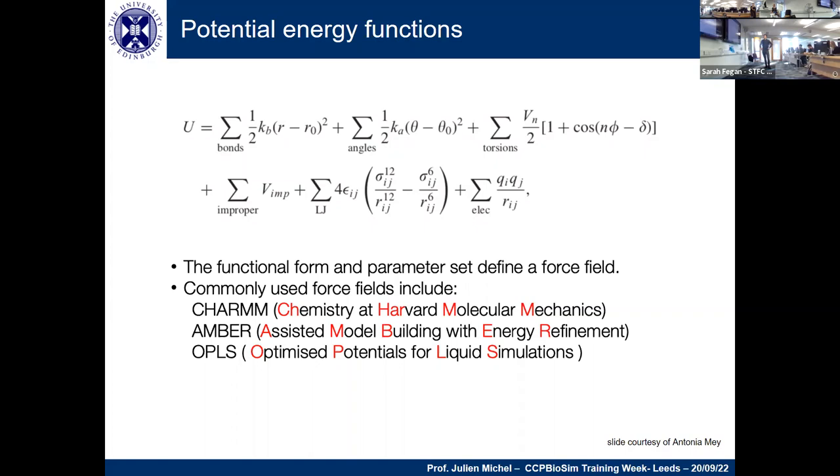We have the intermolecular interactions. We have the Lennard-Jones term: an attractive r to the power of six term, which is quite physically well-motivated - you can show that dispersion interactions fall off with one over r to the sixth. Then we have r to the power of 12, which is less physically well-motivated but does a reasonable job approximating Pauli repulsion. Conveniently, it's the square of the other term, so it's efficient for computation. Finally, we've got our electrostatics in red. The functional form and parameter set are what we call a force field - essentially a function which maps the coordinates of the system to the energy. Commonly used force fields include CHARMM, AMBER, and OPLS.